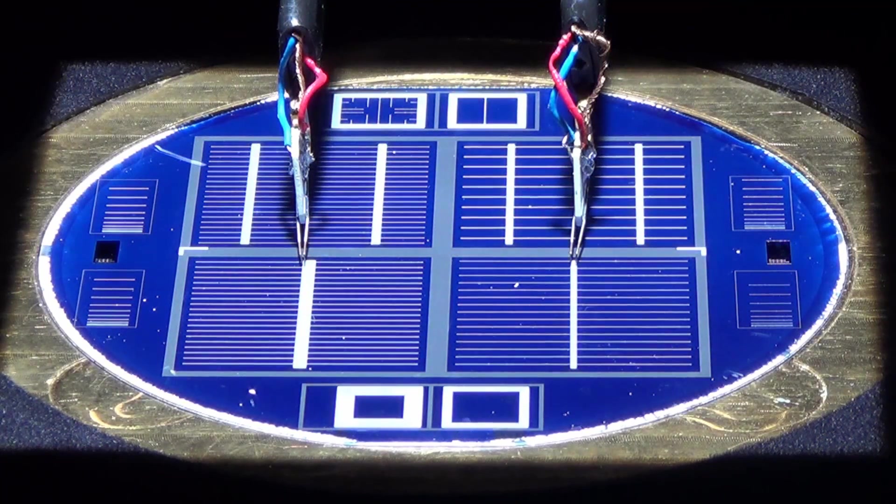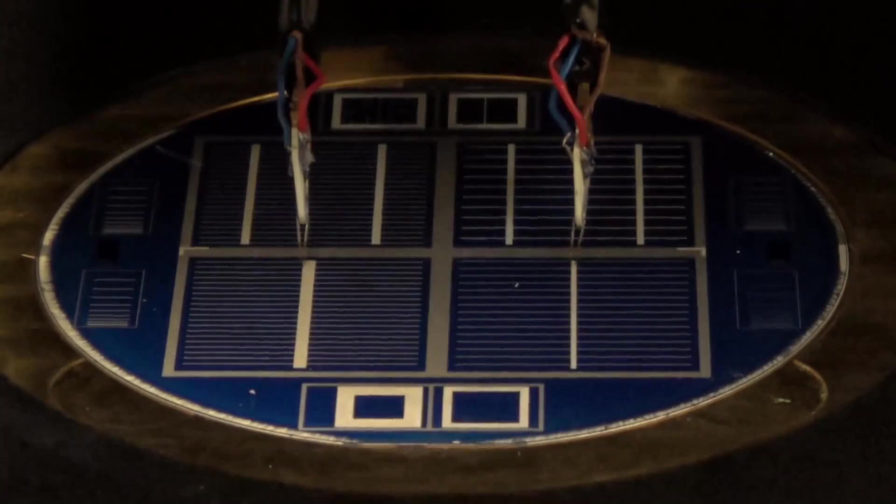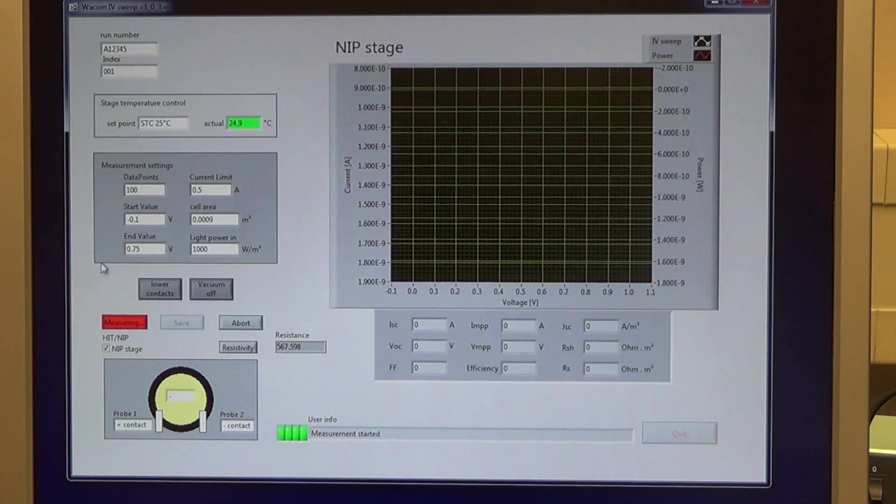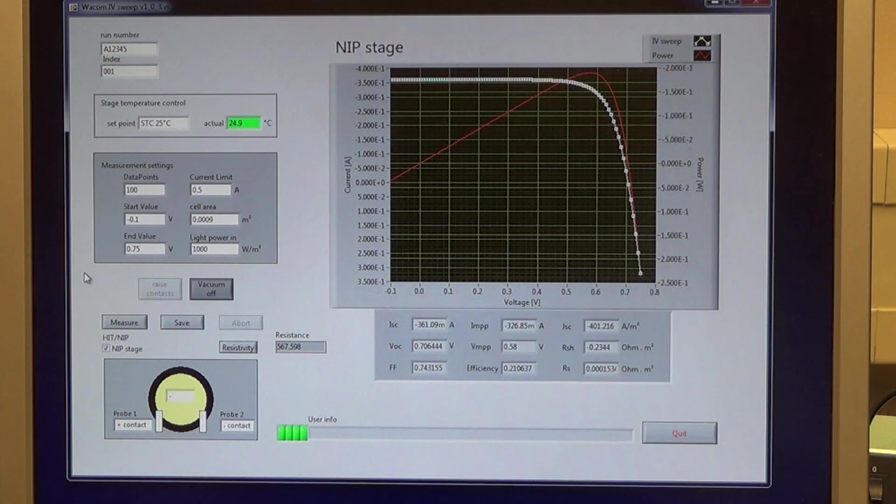Now the voltage will be swept and current measurements are taken at each step. This goes rather quick. The resulting illuminated JV curve will appear on the computer screen accompanied by all the parameters that can be derived from the graph.